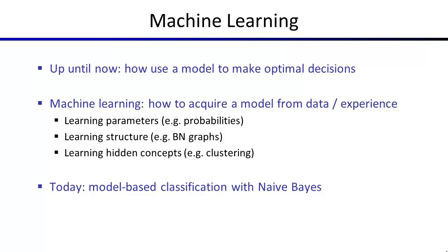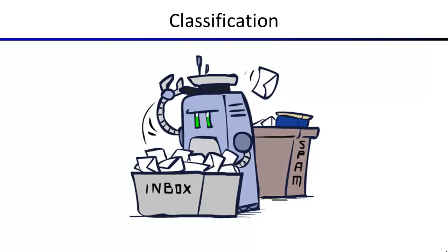Today we're going to talk about what's called model-based classification. That means we're going to be classifying — predicting some random variable. Model-based means we're going to leverage what we know about Bayes nets. Starting next class, we're going to throw away the probabilistic interpretation and learn to directly classify on the basis of errors and error minimization. But for today, we'll introduce classification in the context of Bayes nets, since we've built up all this machinery already.